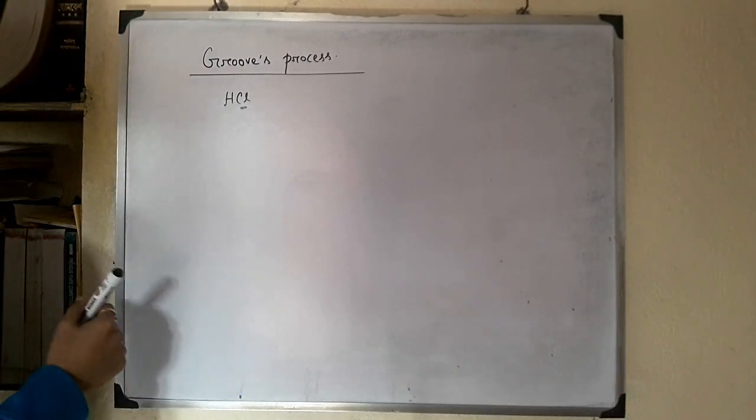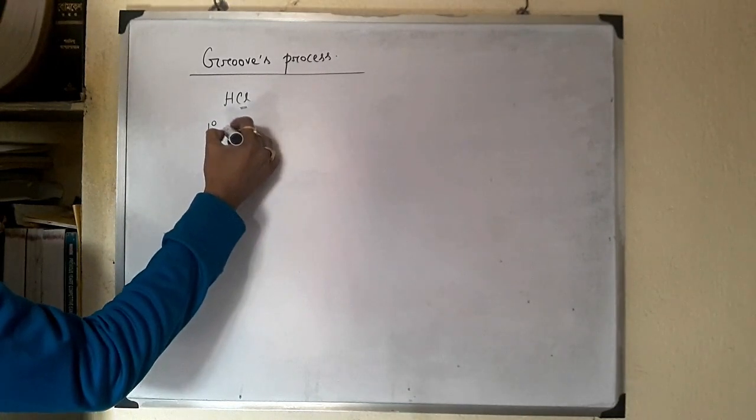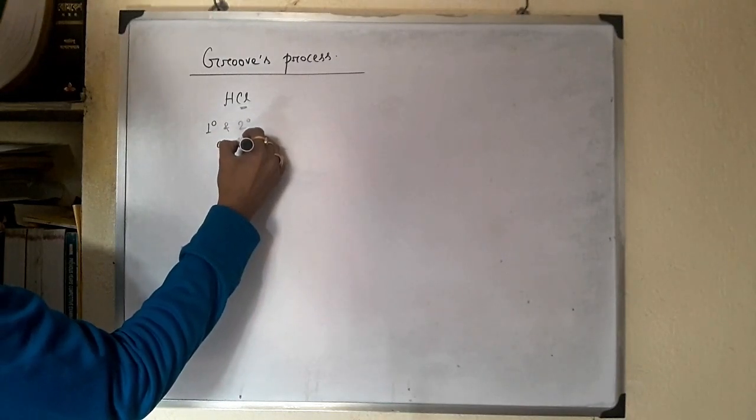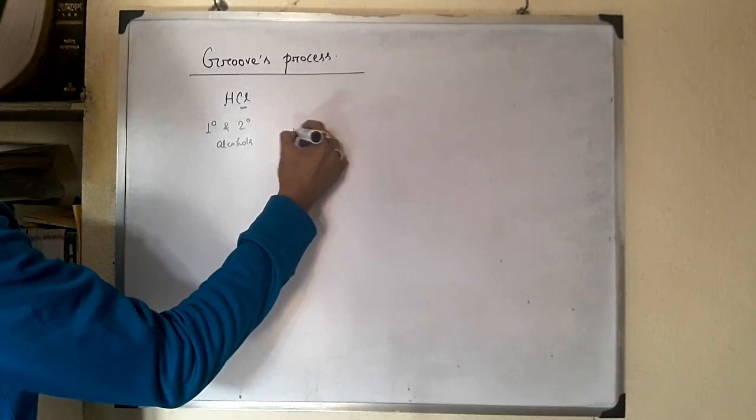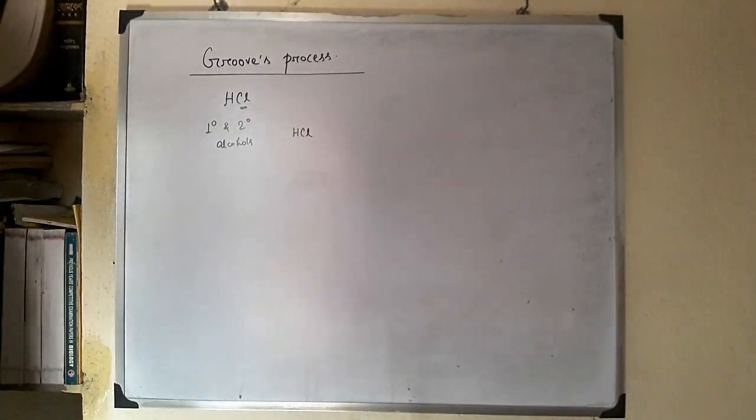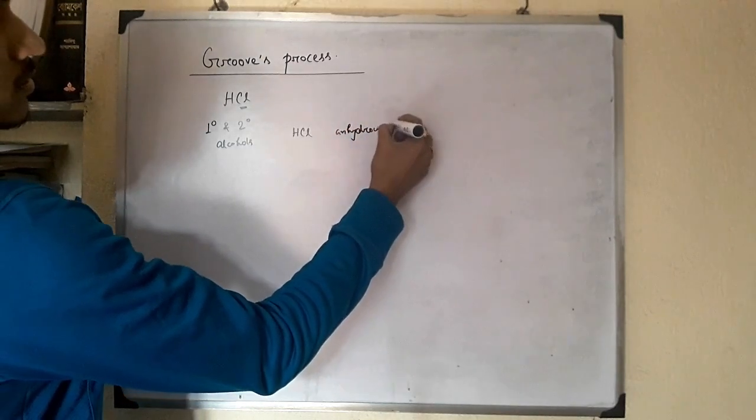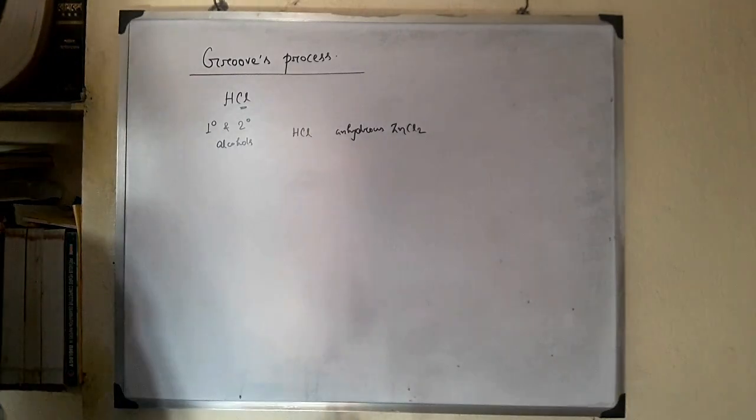Primary and secondary alcohols, when they react with hydrochloric acid HCl in the presence of anhydrous ZnCl2, form chloroalkanes.